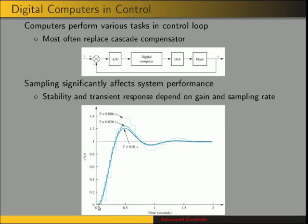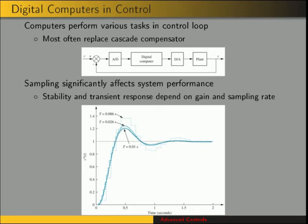For example, this chart shows the output of a digital control system to a step input, plotted for different values of the sampling period. The light blue line is for the biggest sampling period, and you can see it has a larger overshoot than the others. That shows the effect of the sampling rate on stability and transient response. As the sampling rate decreases, we end up with a result closer to the original analog system — the analog system with an equivalent controller or compensator. The point being that we need to analyze both the effect of gain and the effect of sampling rate.